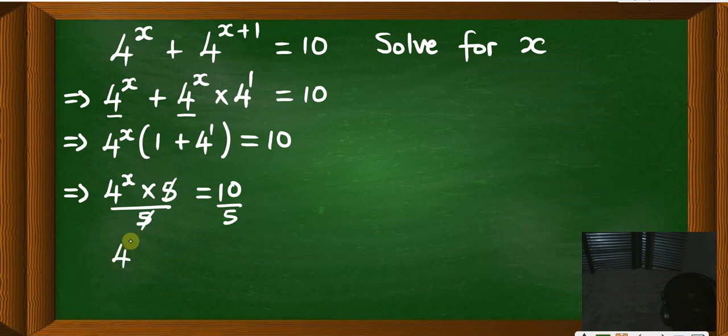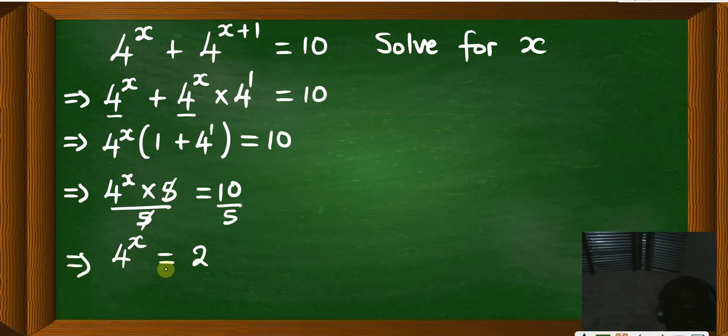You remain with 4 to the power x is equal to, 10 divided by 5 will be 2. So this is what you have. This simply means you have 4 to the power x.